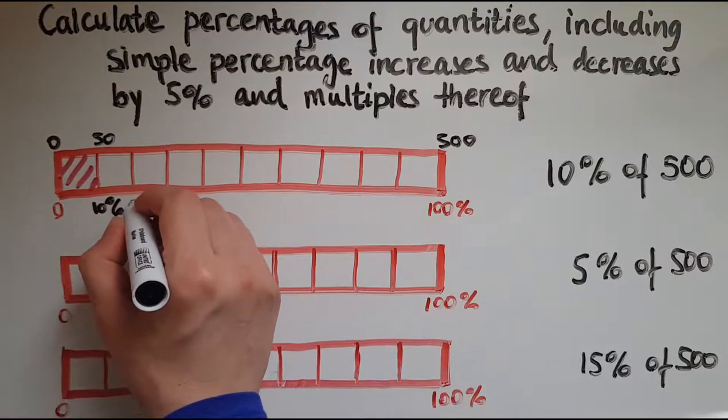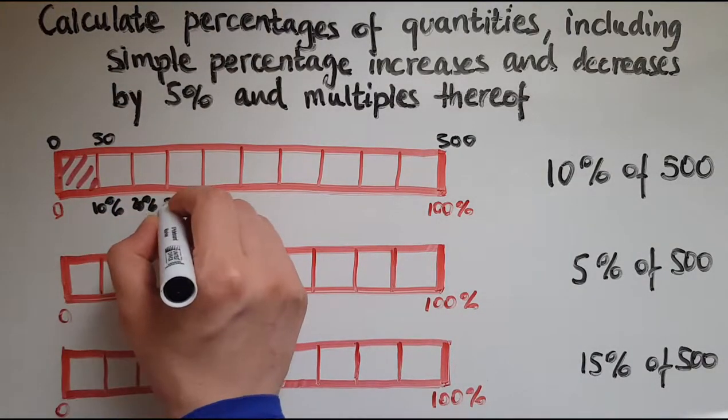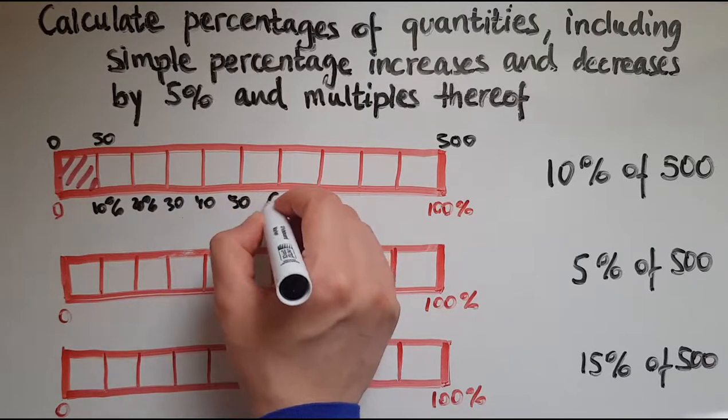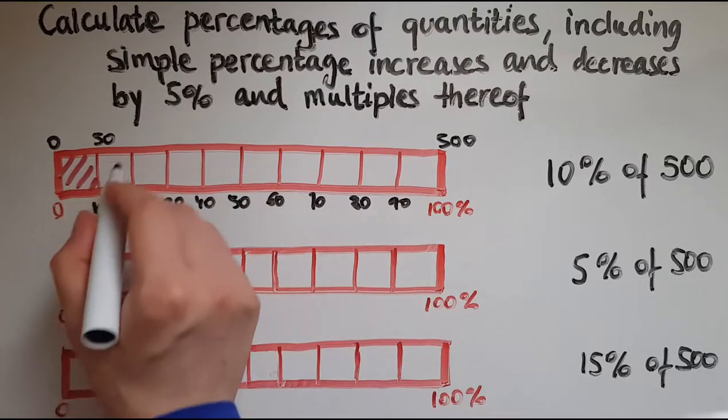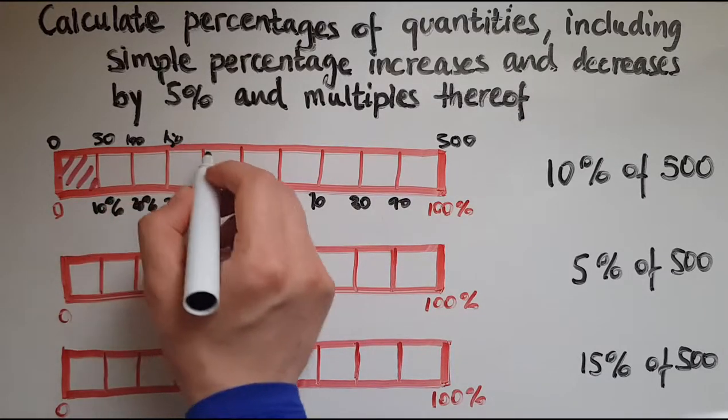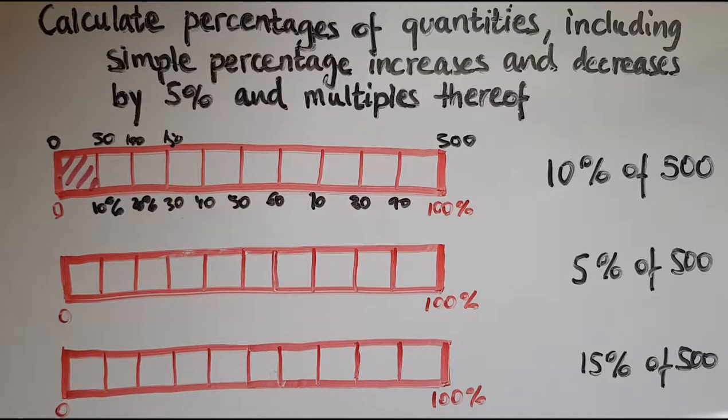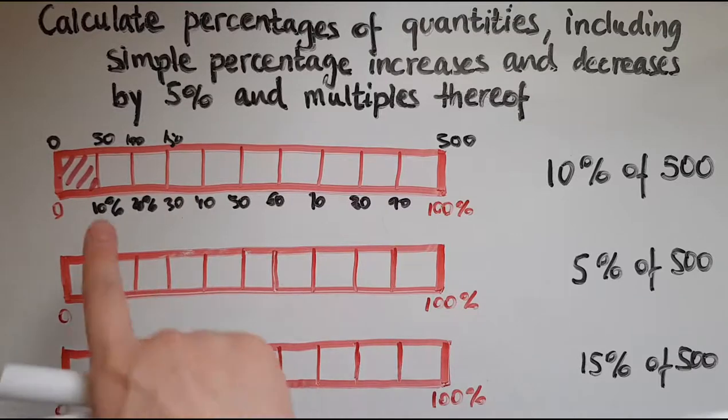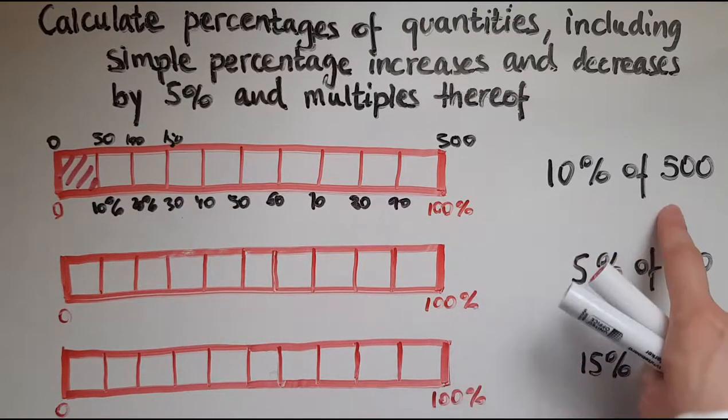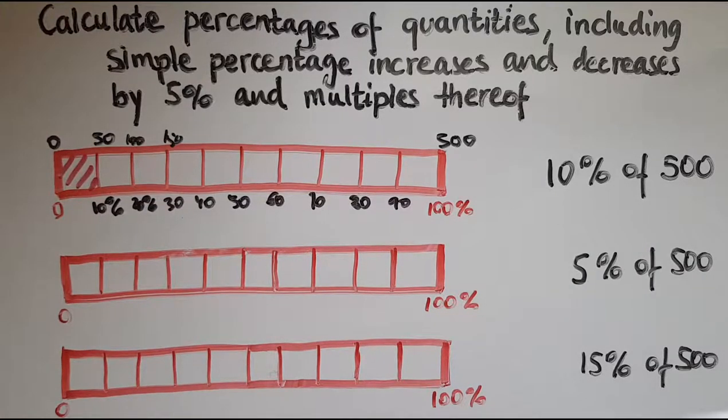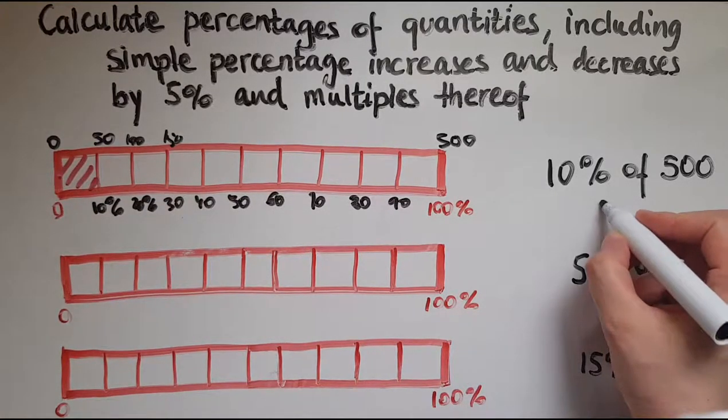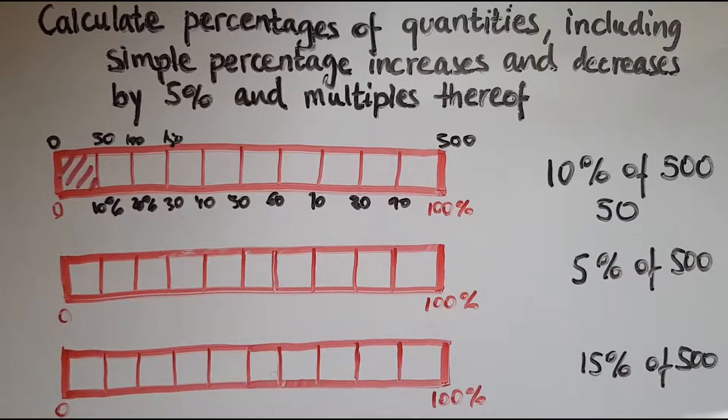10%, 20%, 30, 40, 50, 60, 70, 80, 90%. So this will go 50, 100, 150 and so on. So that's the same pattern, adding 50 each time. But I don't need to continue this because all I need is to work out 10% of 500, which is 50. So what I did was divide 500 by 10.